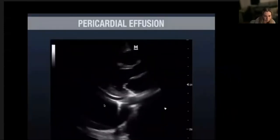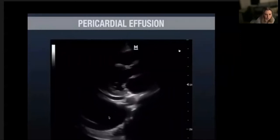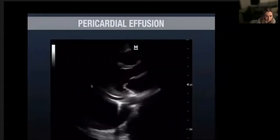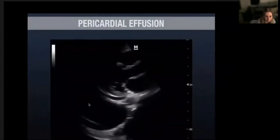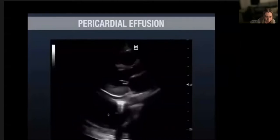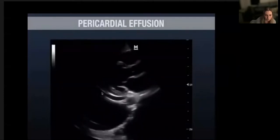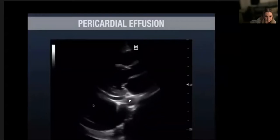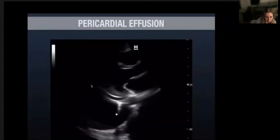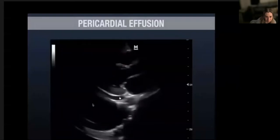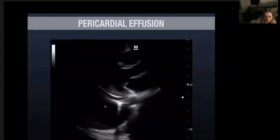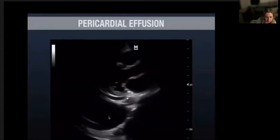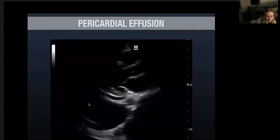What's this one? It says pericardial effusion at the top, but have a look and see what you think - put any thoughts in the chat. Pericardial, pleural, or both? We've got this big anechoic area abutting the descending aorta but dropping down below, suggesting pleural. However, there's also a smaller sliver of fluid about half a centimeter coming up anterior to the thoracic aorta, so that's pericardial. This unfortunate patient has both a pleural and a pericardial effusion.